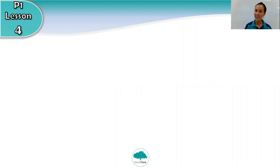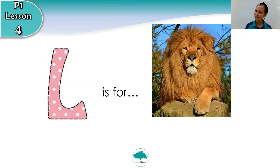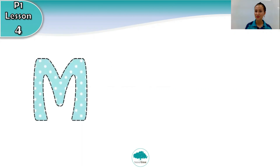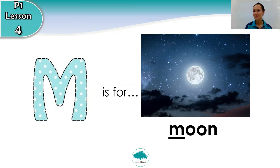Okay, it's time for the next letter. Letter L. Letter L is for lion. Lion. Can you repeat? Lion. Very good! Next, letter M is for moon. Can you repeat? Moon. Very good!